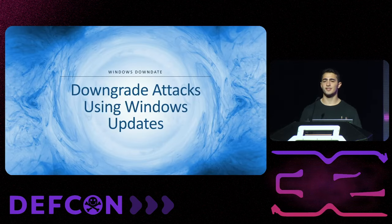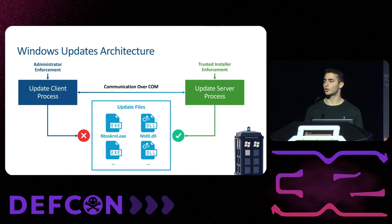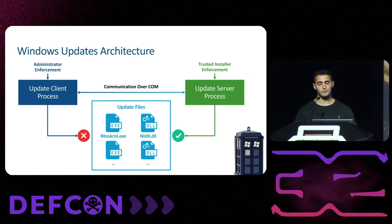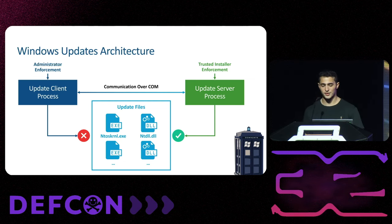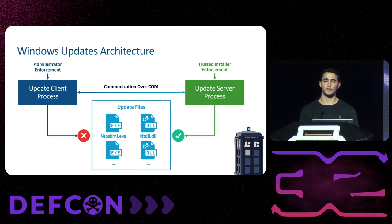The Windows update architecture is as follows: we have an update client and an update server that communicate over COM — an inter-process communication method in Windows. Administrator is usually enforced on the client side, and Trusted Installer is always enforced on the server side. Most importantly, system files owned and updated by Windows Update are only accessible to Trusted Installer, so even administrators cannot directly modify these system files.